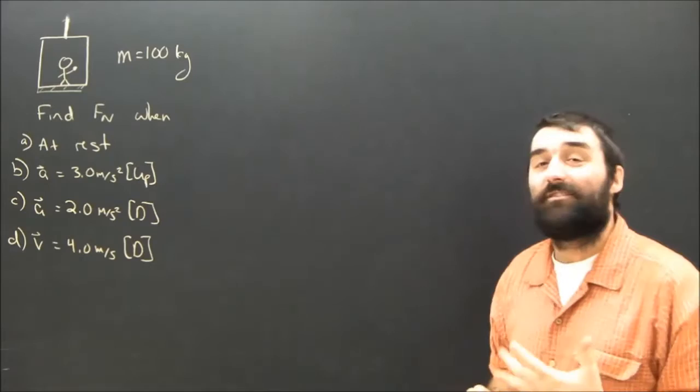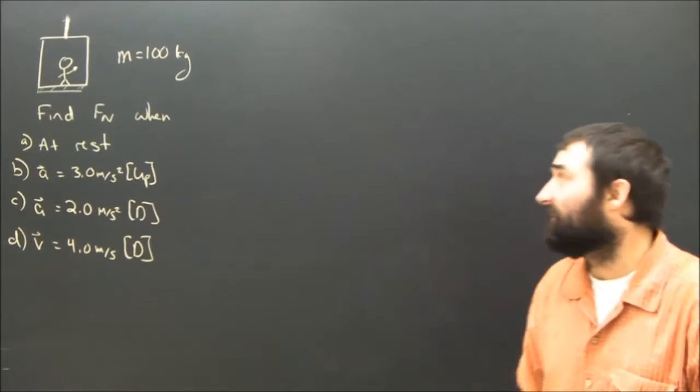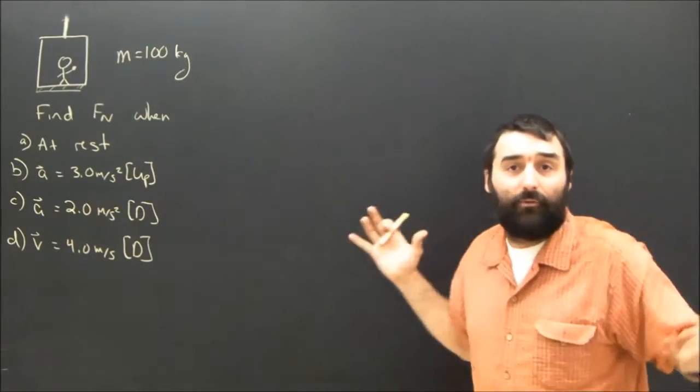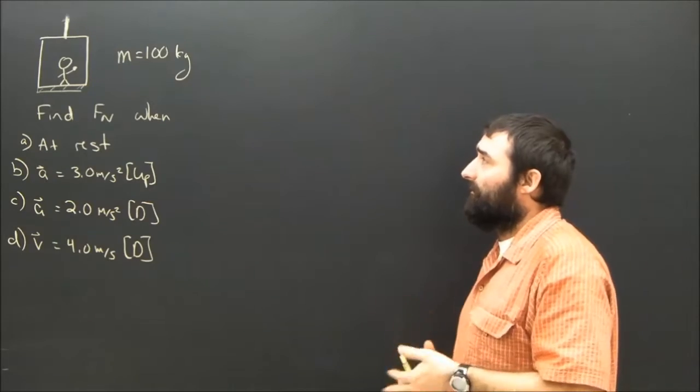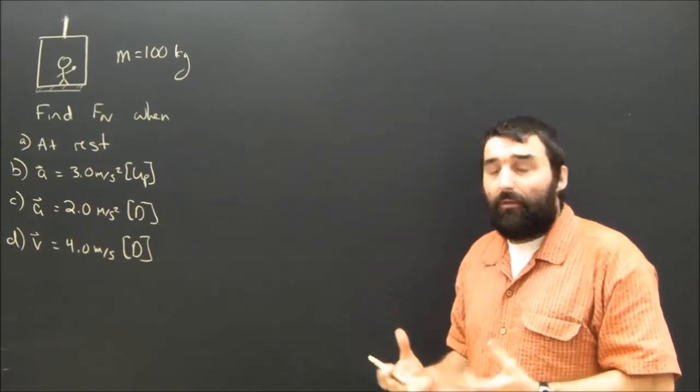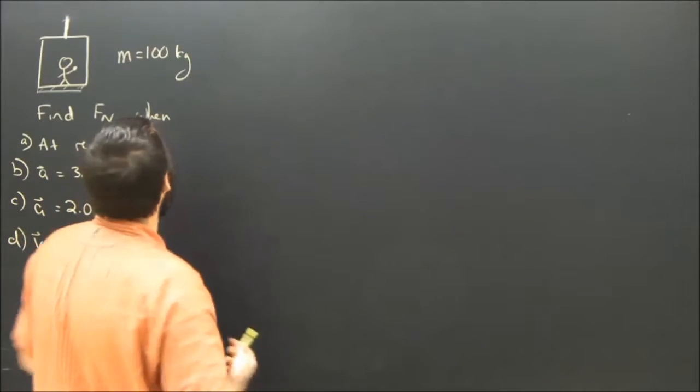First thing we're going to do is obviously draw a free body diagram, but of what? This is probably the worst part for most students - they mess up the free body diagram and then the whole question turns out to be garbage. So what do we draw a free body diagram of? The elevator or the person? The question is finding the normal force on the person, so we're going to draw a free body diagram of the person.